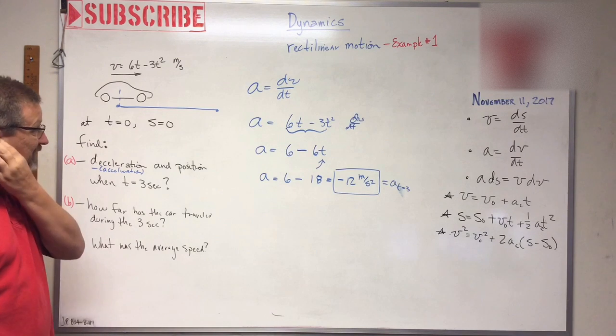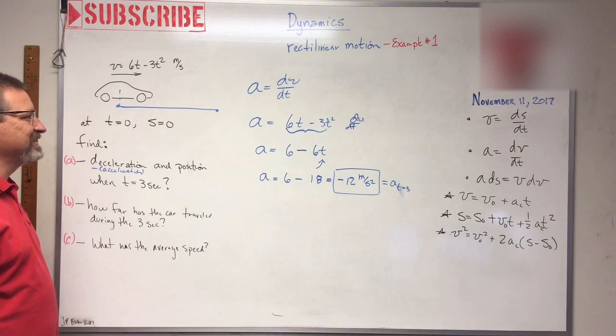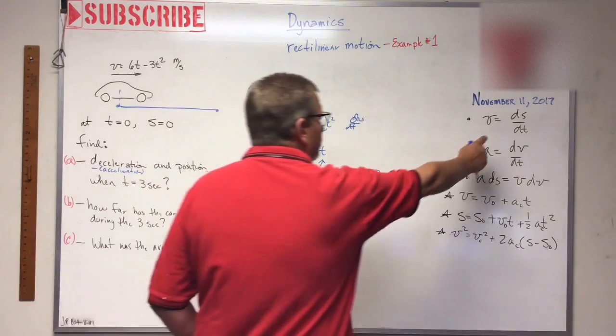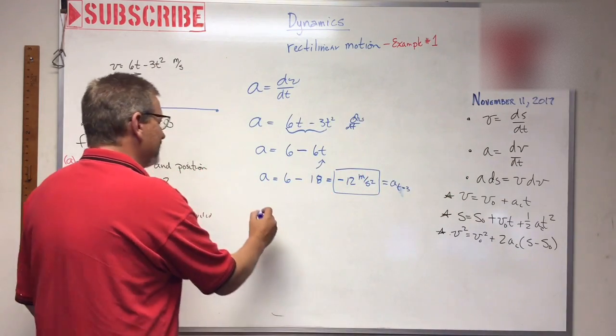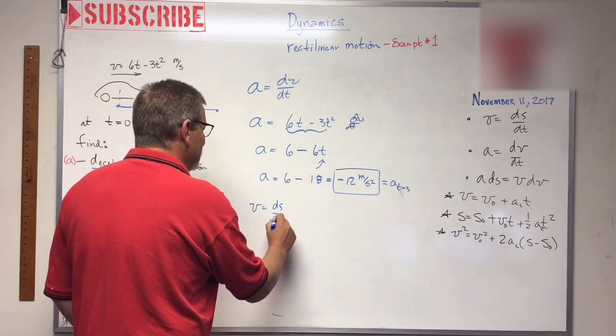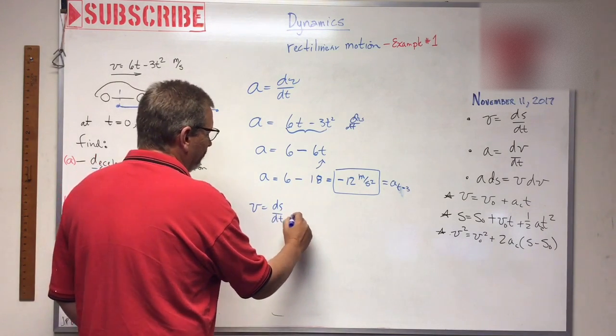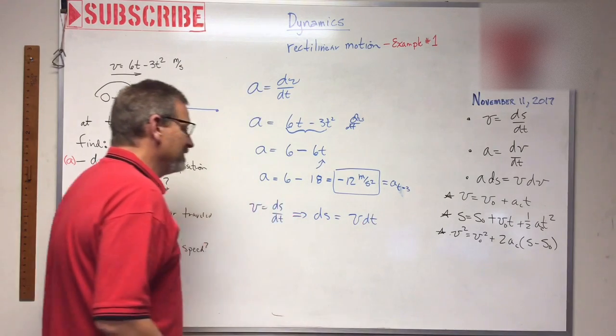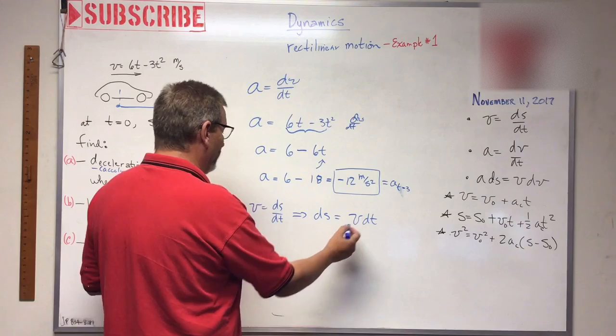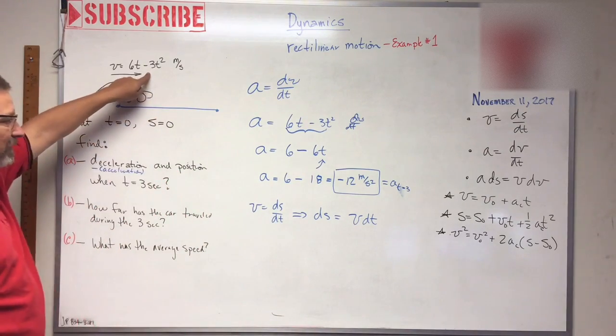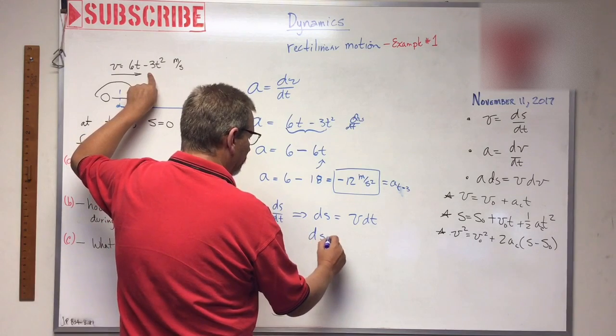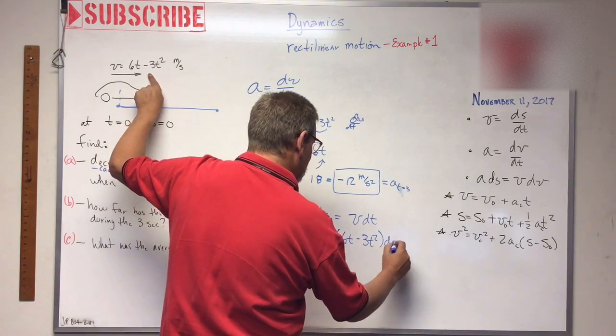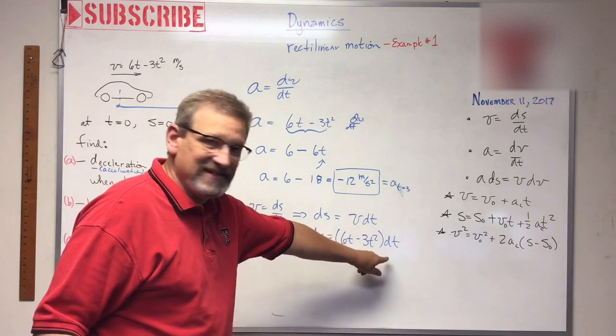Now they want to know the position. How do we know the position when t equals 3 seconds? We can do that too. Because we know position is up here. Position is like v is equal to ds over dt. That's position, so let's get that by itself. Let's say that ds is equal to v dt. And then we want to get that by themselves, so let's just do the integral. And we know what v is, don't we? v is equal to that. So ds is equal to 6t minus 3t squared dt.